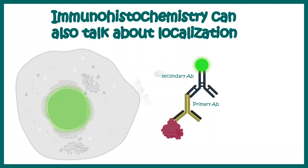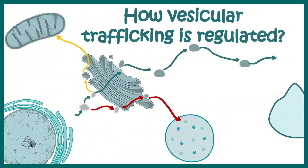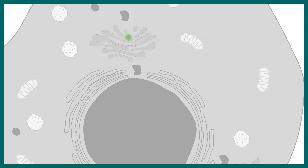Let's say we want to study vesicular trafficking inside the cell — it's a dynamic process happening in real time, so we cannot rely on a frozen snapshot. We can label a particular vesicle with GFP. For example, we can tag RAB with GFP; RAB is linked with vesicles so the vesicles would also be labeled. Wherever these vesicles go, we can see the fluorescence and track their position in real time.